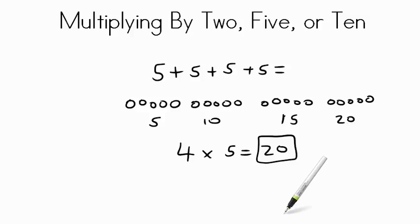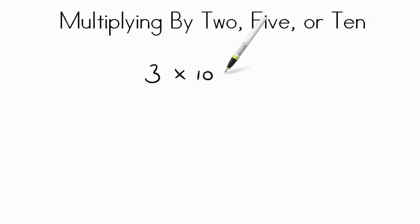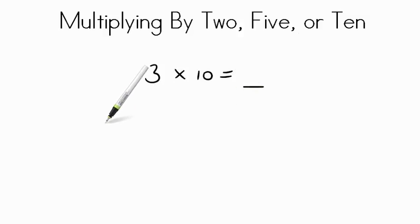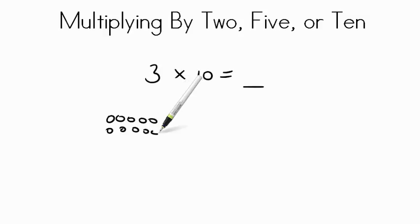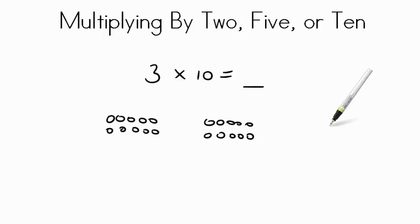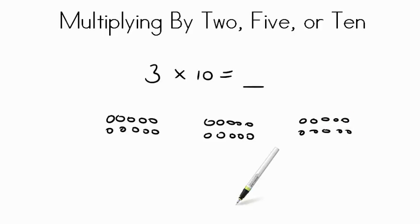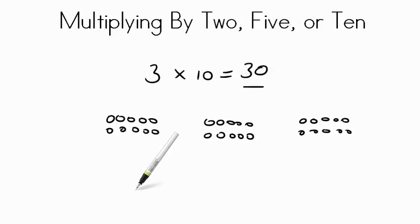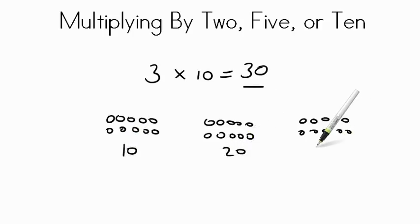Now the same thing goes for 10's. If we had the number 3 times 10 and were trying to figure out that multiplication answer, we would have to make 3 groups of 10. So if we have one group of 10 here — 1, 2, 3, 4, 5, 6, 7, 8, 9, 10 — and we have another group of 10, and we have one more group of 10. Can you skip count by 10's to figure out the product or answer? If you did it correctly, your answer is 30. We can skip count to figure this out: 10, 20, 30.